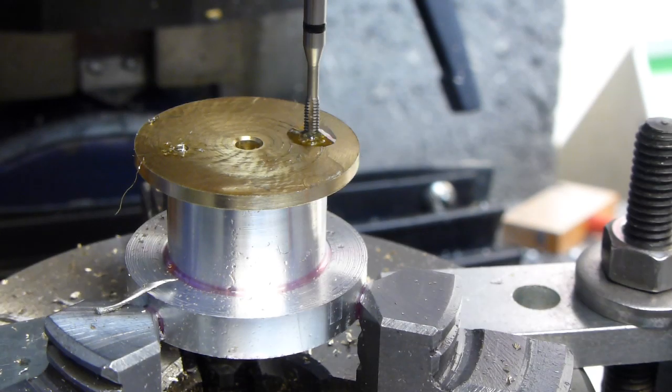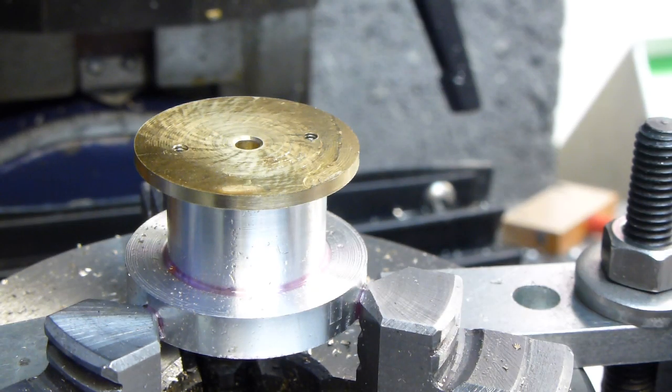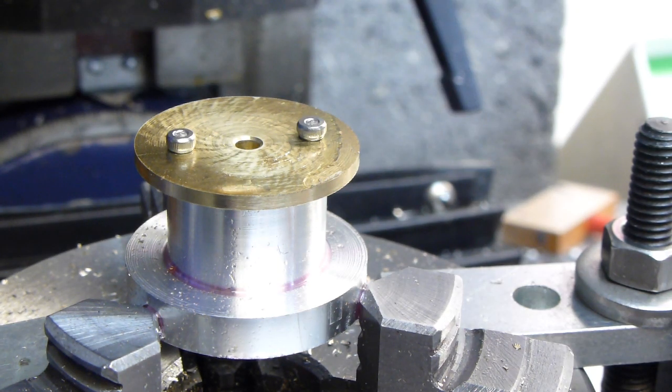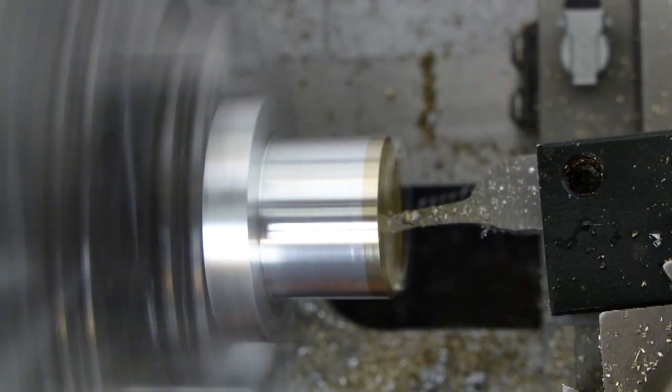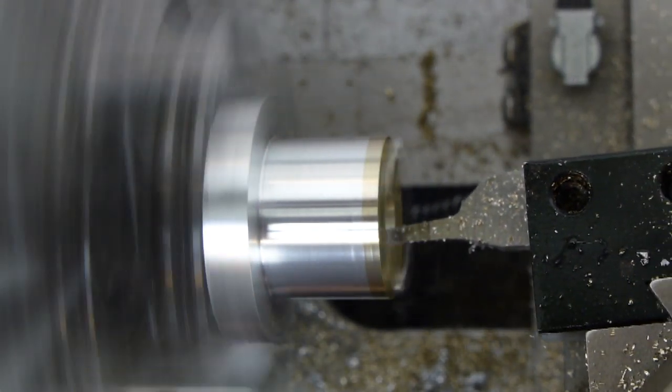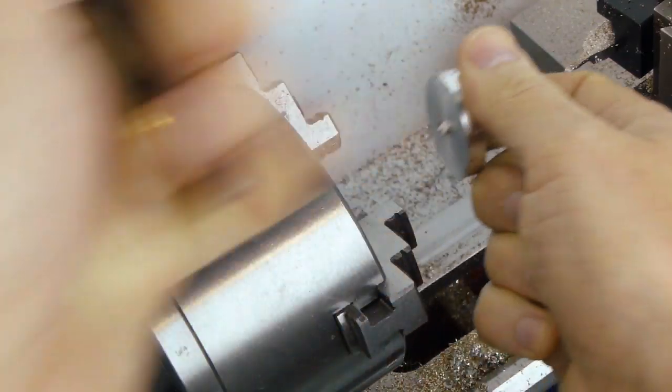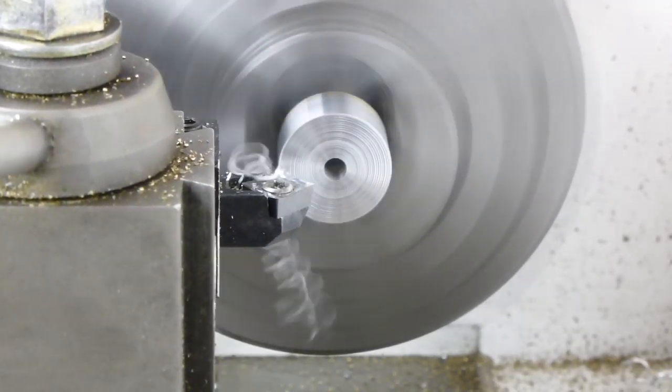There was drilling, there was tapping and there was fitting M2 screws. Back on the lathe, the end cap was trimmed to size, and its centre hole was opened out. Once cut from the parent stock, the rough end was tidied up.